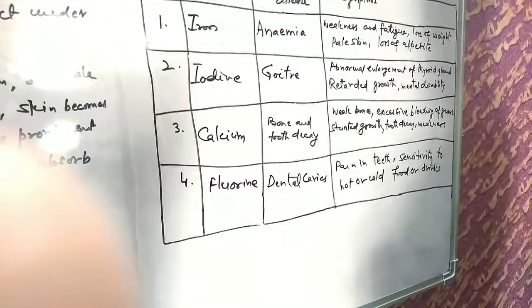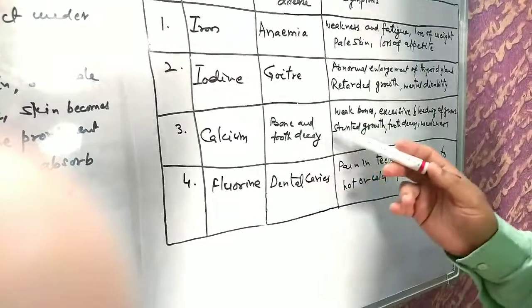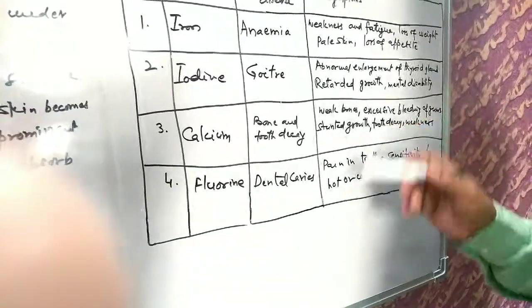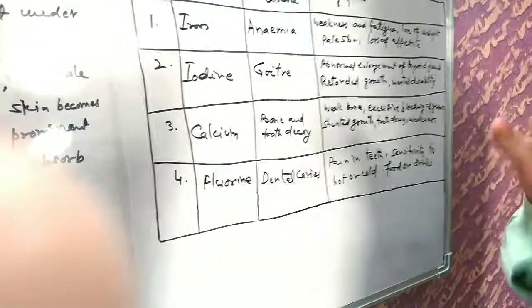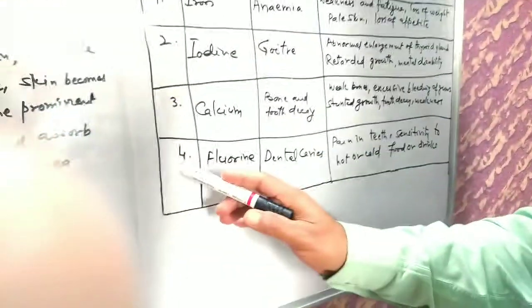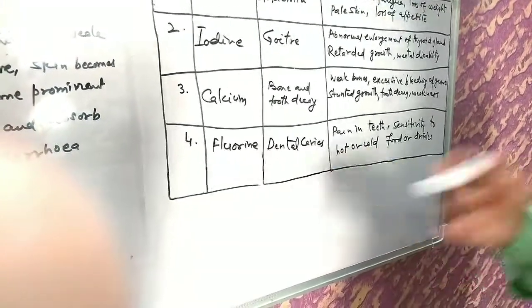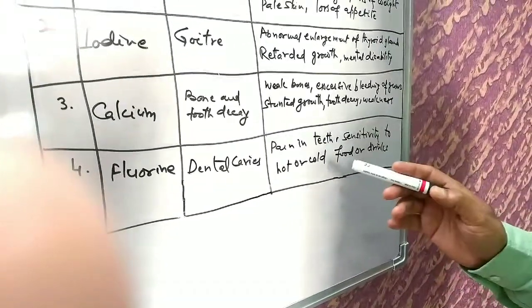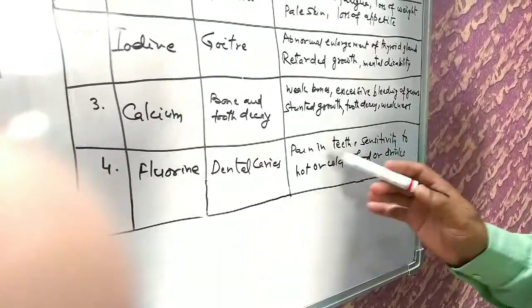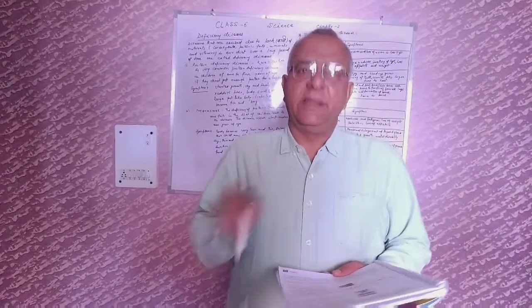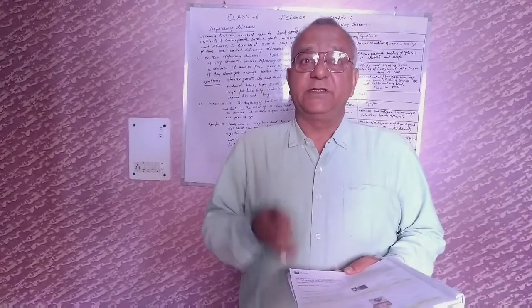Third category is calcium. Deficiency causes bone and tooth decay. Weak bones, excessive bleeding of gums, stunted growth, tooth decay and weakness result. Next category is fluorine. Fluorine deficiency causes dental caries - cavities in teeth. Symptoms are pain in teeth and sensitivity to hot and cold food or drinks.